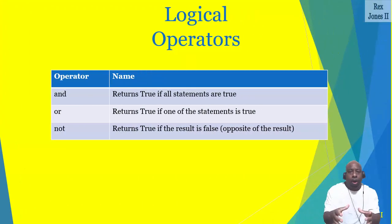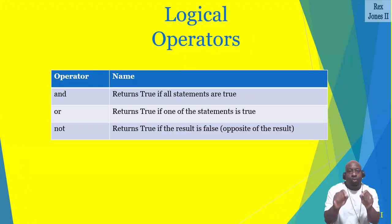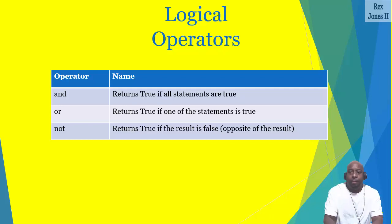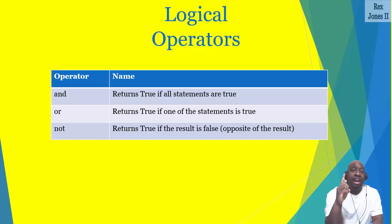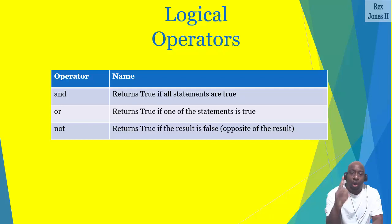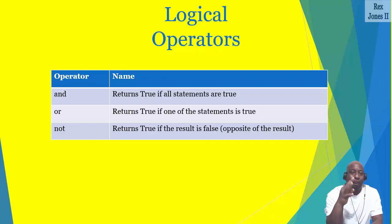That's it for comparison operators. Now let's take a look at the logical operators. The purpose of a logical operator is to combine more than one expression, or one conditional statement. There are three logical operators: AND, OR, and NOT. AND returns true if all statements are true. OR returns true if one of the statements is true. NOT returns the opposite.